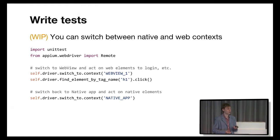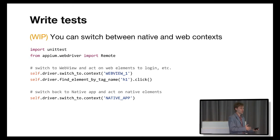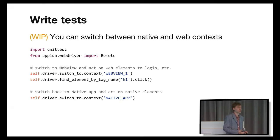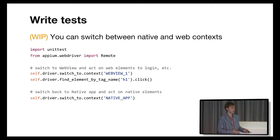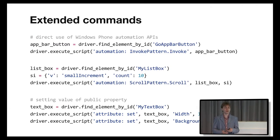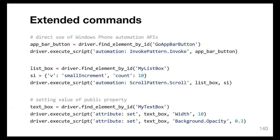It also lets you switch between contexts. So if your app has a web view for authentication, you can switch to that web view, use regular Selenium to automate it, and then switch back to the native context. We haven't released this yet, but you can build it from sources. Also, because the automation server is inside your application, you can do cool things like call any static method in your application or set any public property value in the UI. For example, with a map view, you can set coordinates directly and very precisely, without using touch gestures or writing a custom test API.